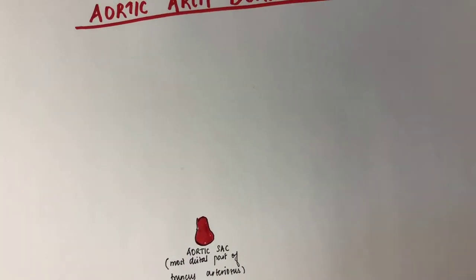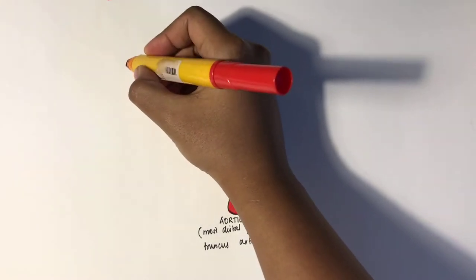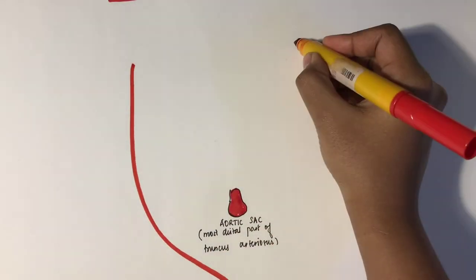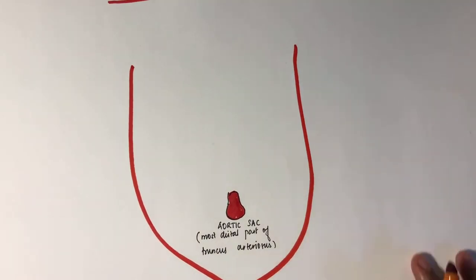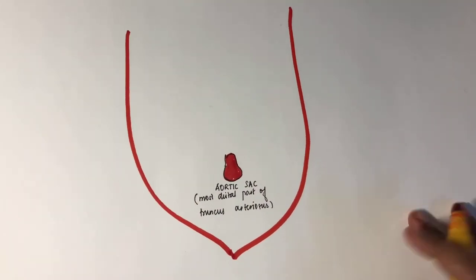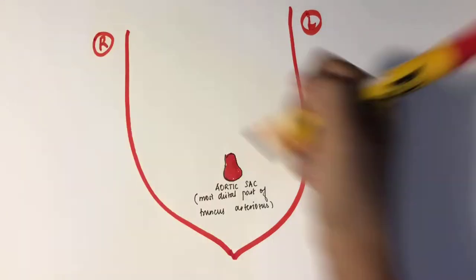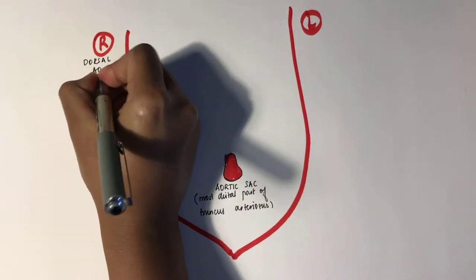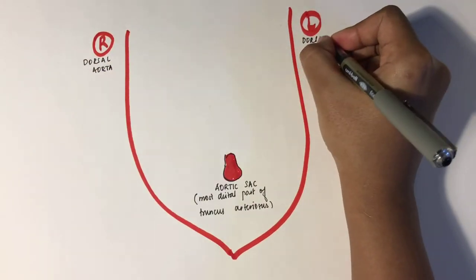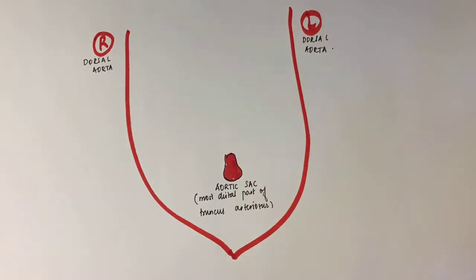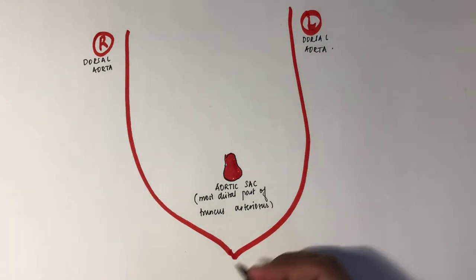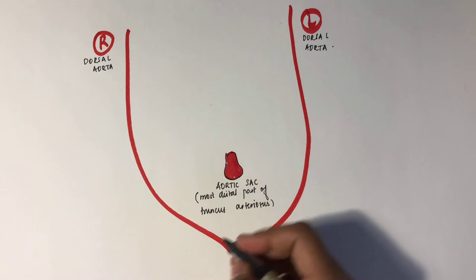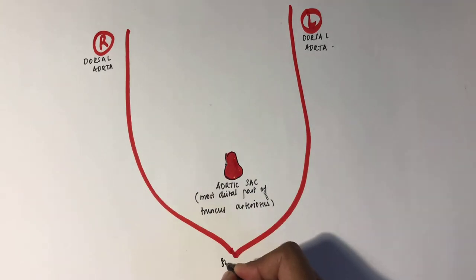The aortic arches join into the left and right dorsal aorta, which I'm drawing here. The left and right dorsal aorta, caudal to the aortic sac, fuse to form a single vessel.